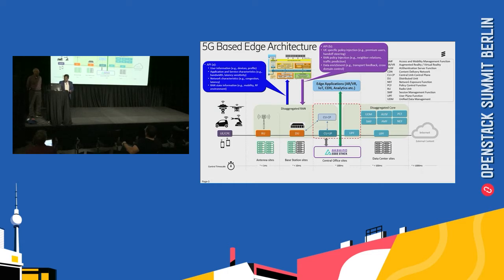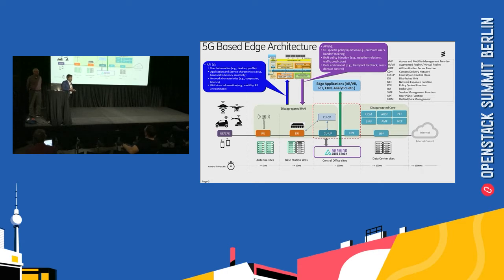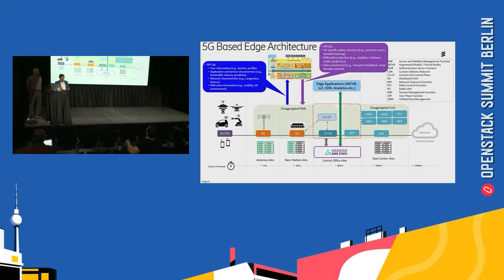The next class of API is API B, where you can inject the information you've collected to optimize and better manage the RAN components. For example, you could inject UE-specific policy information towards the RAN and tell the RAN that if this is a premium user, provide higher bandwidth or better quality.